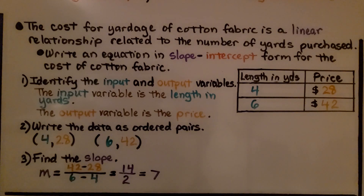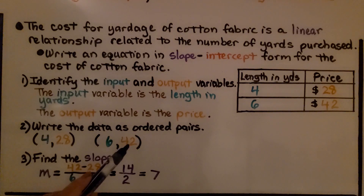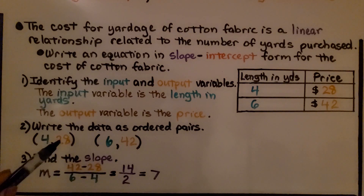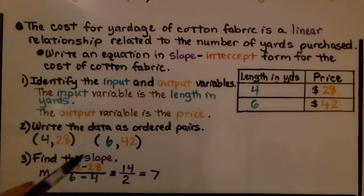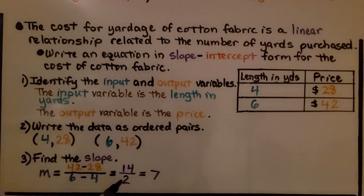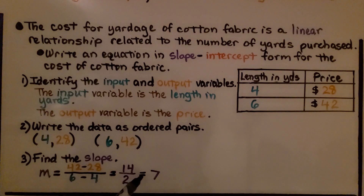We find the slope using the slope formula. We have the second y value minus the first y value — that gives us 14. The second x value minus the first x value gives us 2. And 14 over 2 reduces to 7.